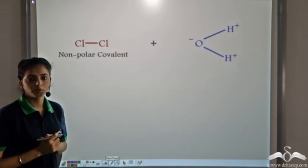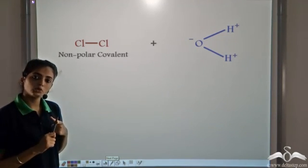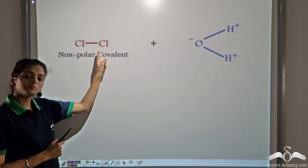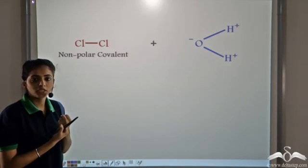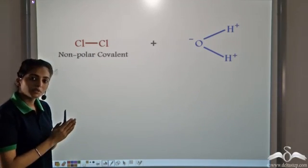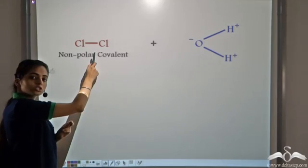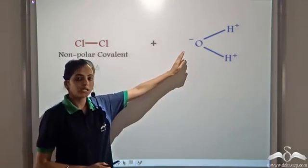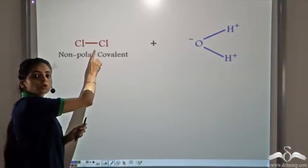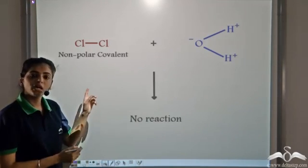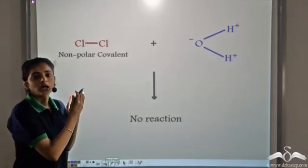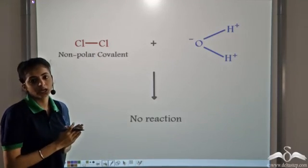Now what happens for covalent compounds? There are two types of covalent compounds: polar covalent compounds and non-polar covalent compounds. In non-polar covalent compounds, both atoms are similar, so one atom cannot attract the shared pair of electrons towards itself as both atoms have equal electronegativity. This means there is no separation of charge. So if it is made to react with water, the negative oxygen end and the positive hydrogen end of water cannot separate the two atoms. So with a non-polar covalent compound, since there is no separation of charges, the ions do not separate out and no reaction takes place.